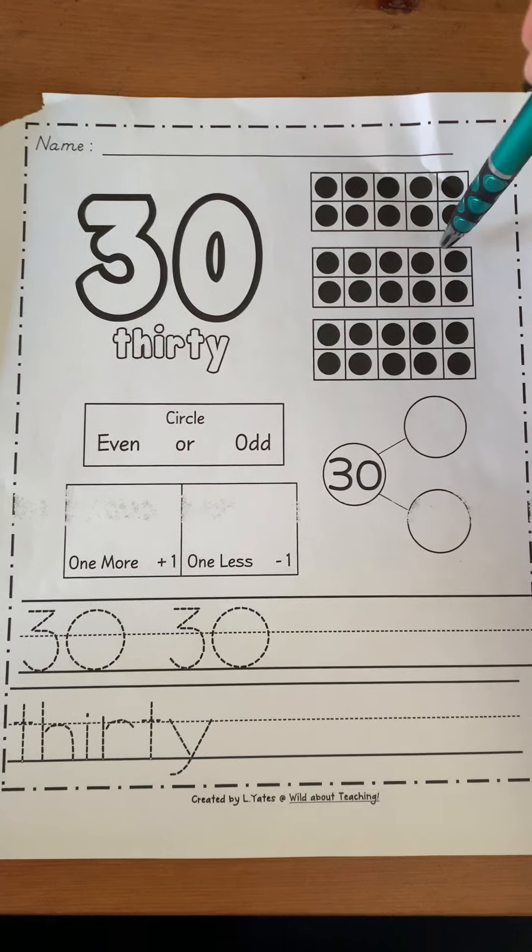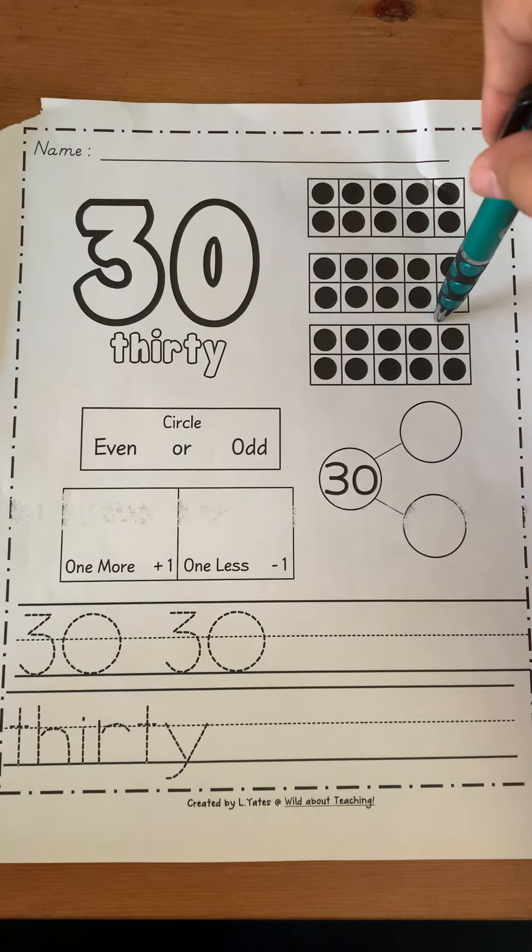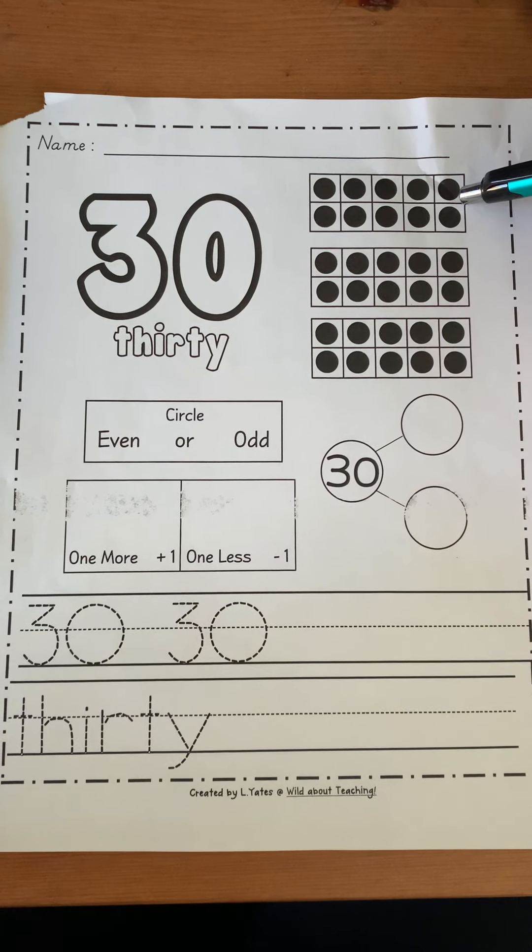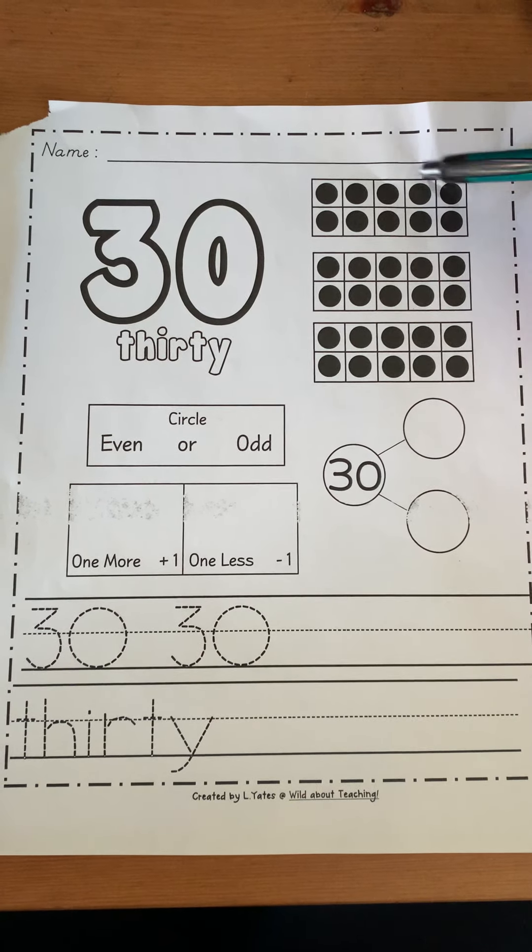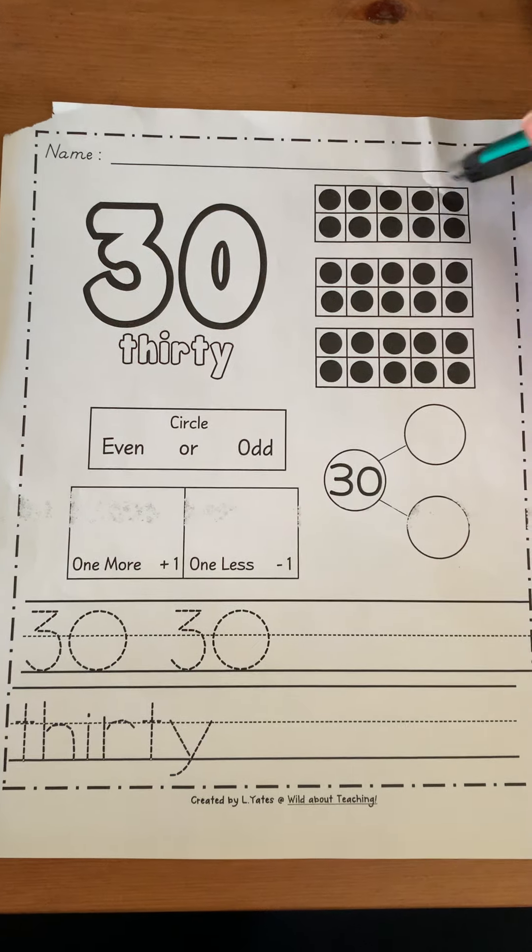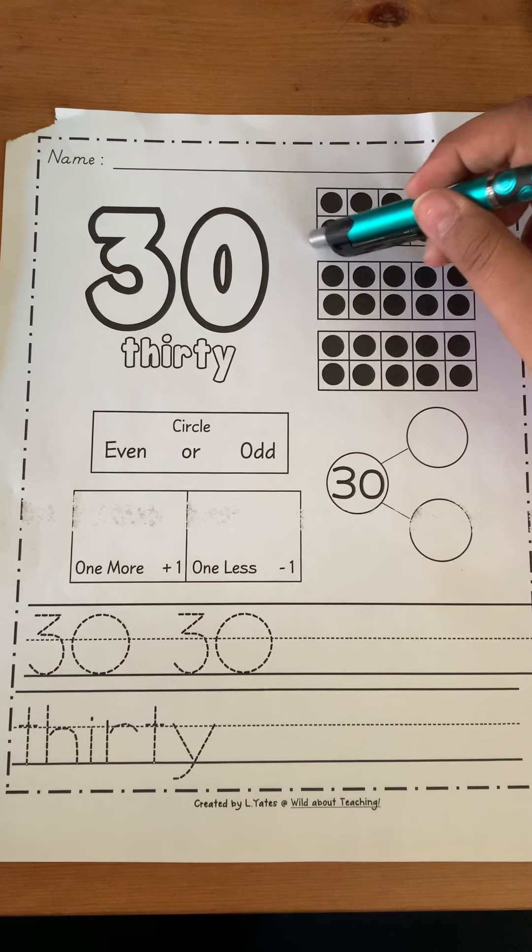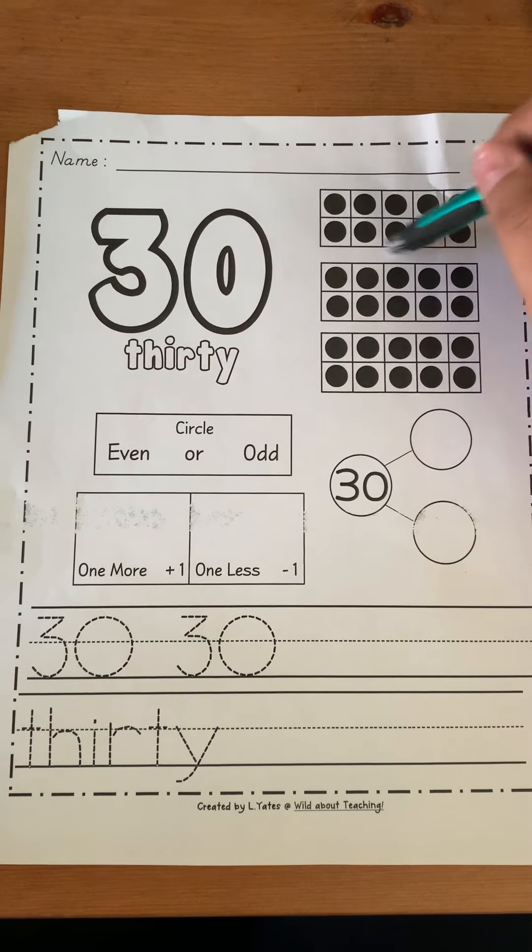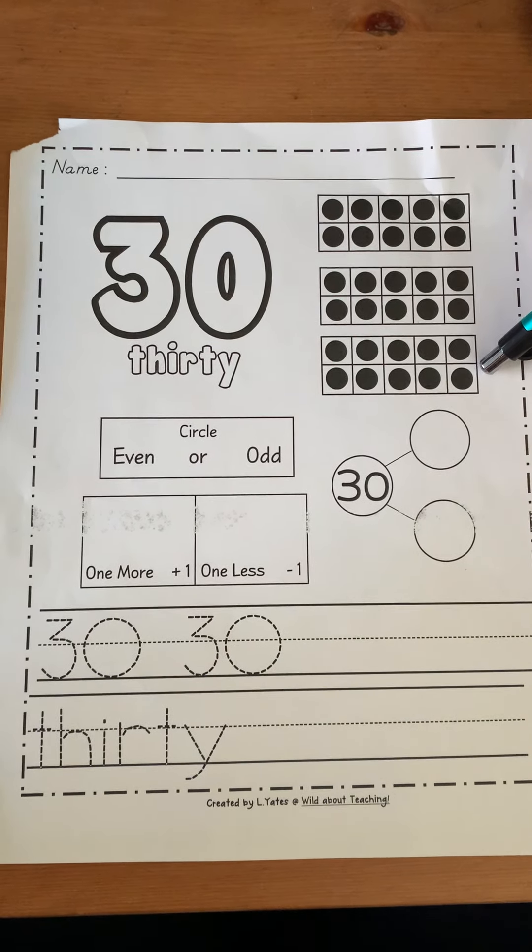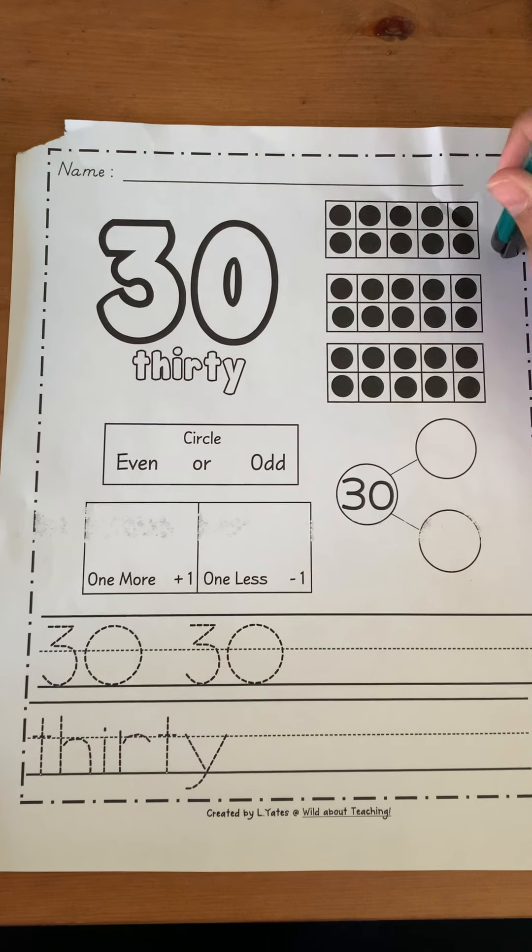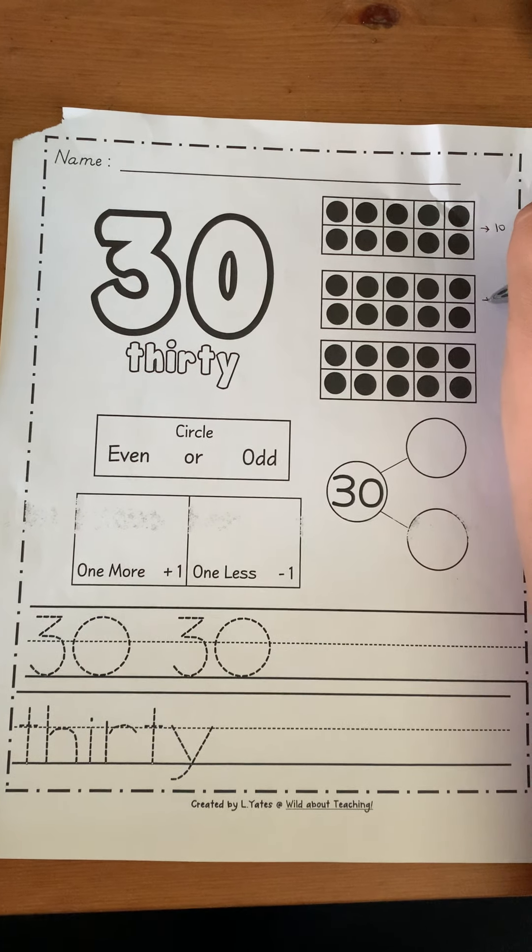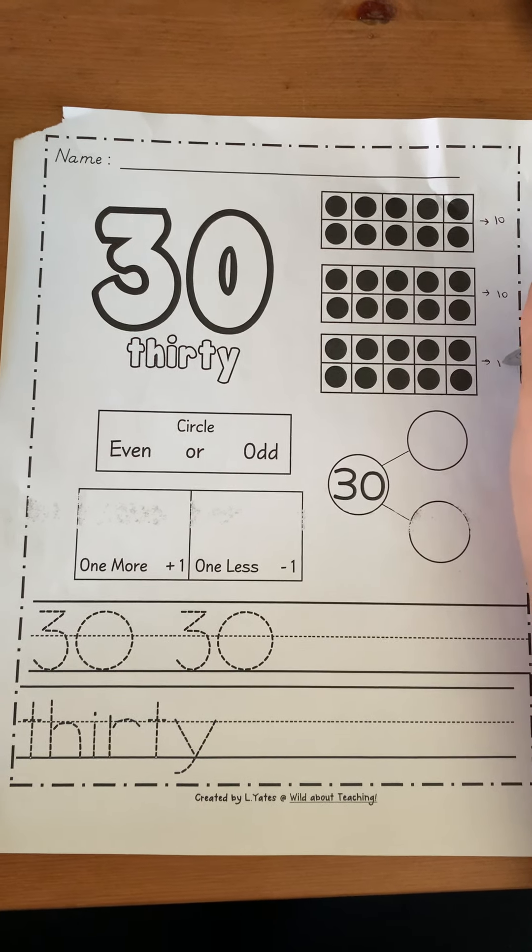We are going to go ahead and count through our 10 frames here, but we're going to count by 10s. We know that in each 10 frame that's full, so every single box inside the 10 frame has something in it, that means it's full. That means there are 10 markers in each 10 frame. If we look, all three of our 10 frames are full. There's not one box left open. So then we know that this is 10, 10, and 10.